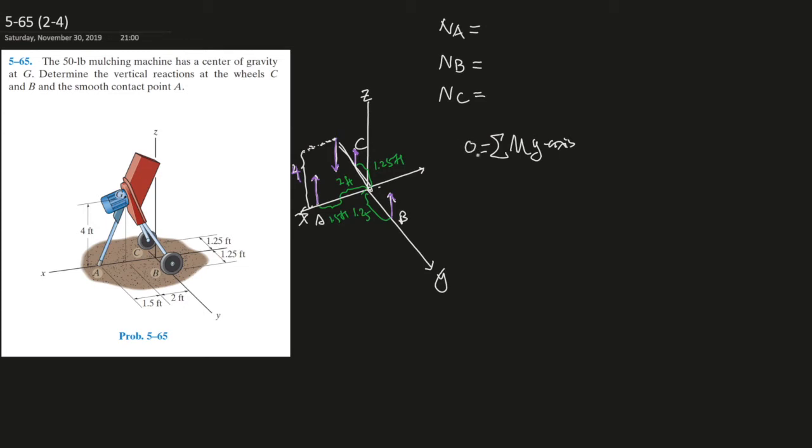NA times 1.5 plus 2 feet, times 3.5 feet over here. Since we're looking at it from the y-axis, then this is generating a circle around the y-axis, a rotation.